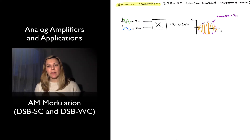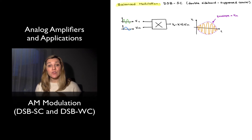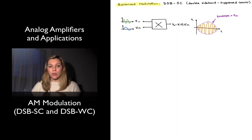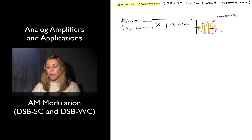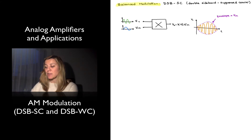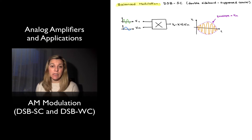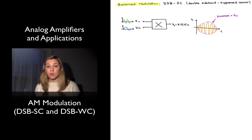We have seen how analog multipliers can be used in amplitude modulation, and now we're going to take a closer look at how that is achieved. One particular amplitude modulation scheme we're going to look at is balanced modulation, which is another form of saying double sideband suppressed carrier, or DSBSC modulation — a form of amplitude modulation which suppresses the carrier frequency.